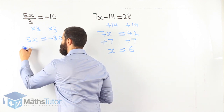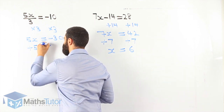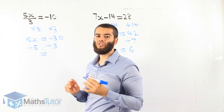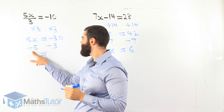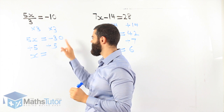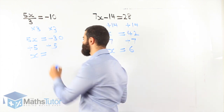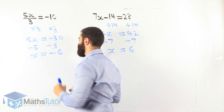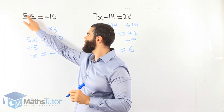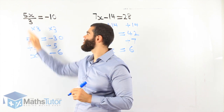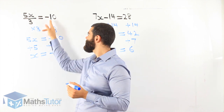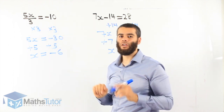Now we just divide by 5. We know 5x is 5 times x, so the opposite of times is divide — divide by 5 on both sides. 5 divided by 5 leaves 1x. Negative 30 divided by 5 is negative 6 — that's our answer. Let's check: x is negative 6, so 5 times negative 6 is negative 30. Negative 30 divided by 3 equals negative 10. It works — it's correct!